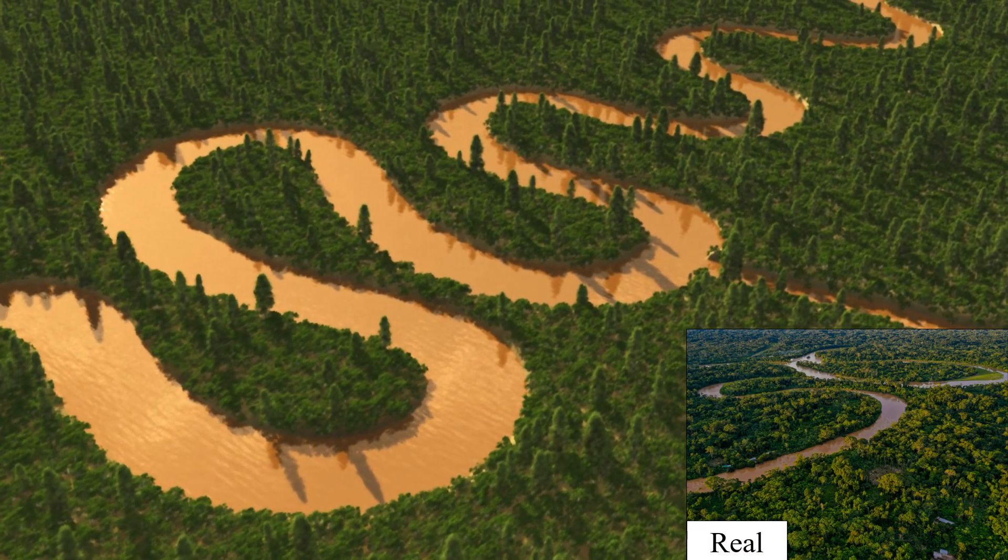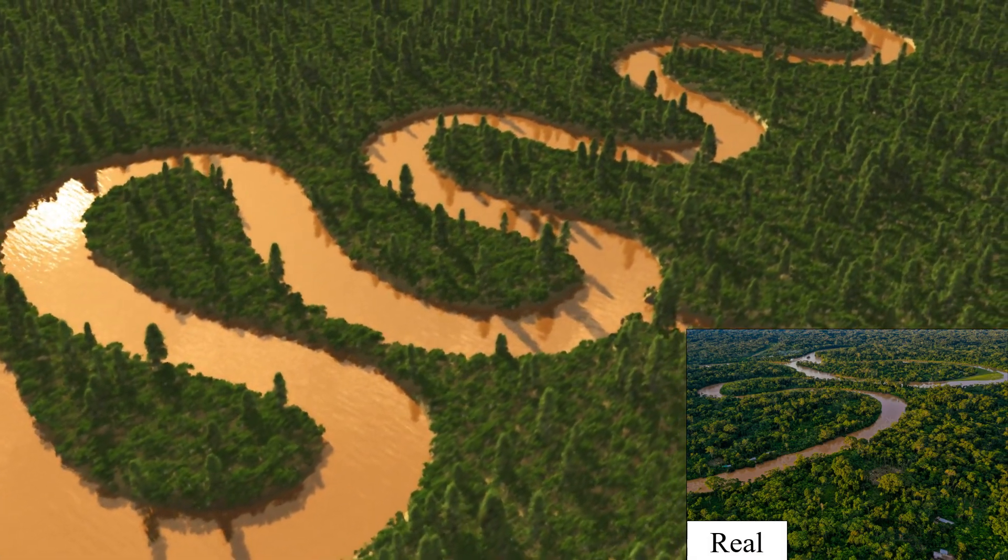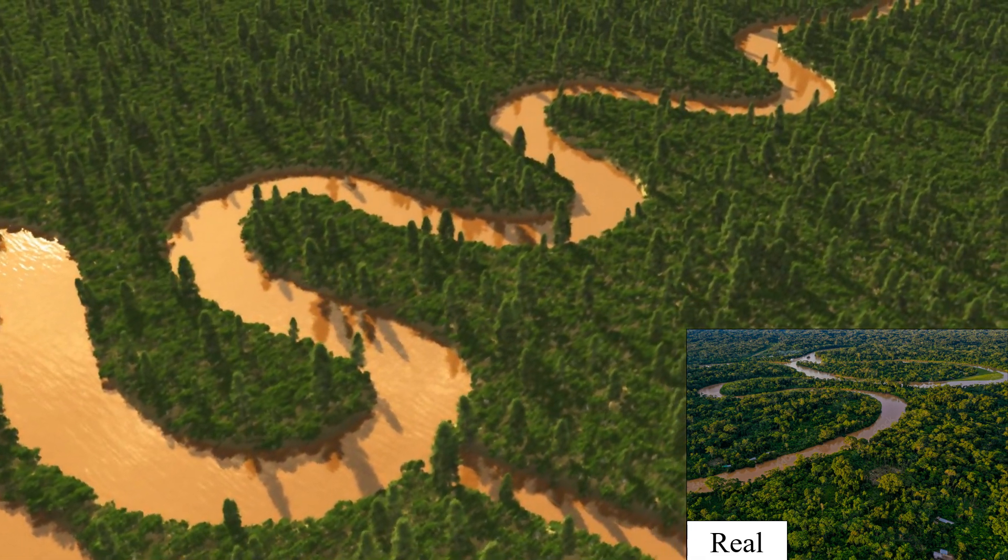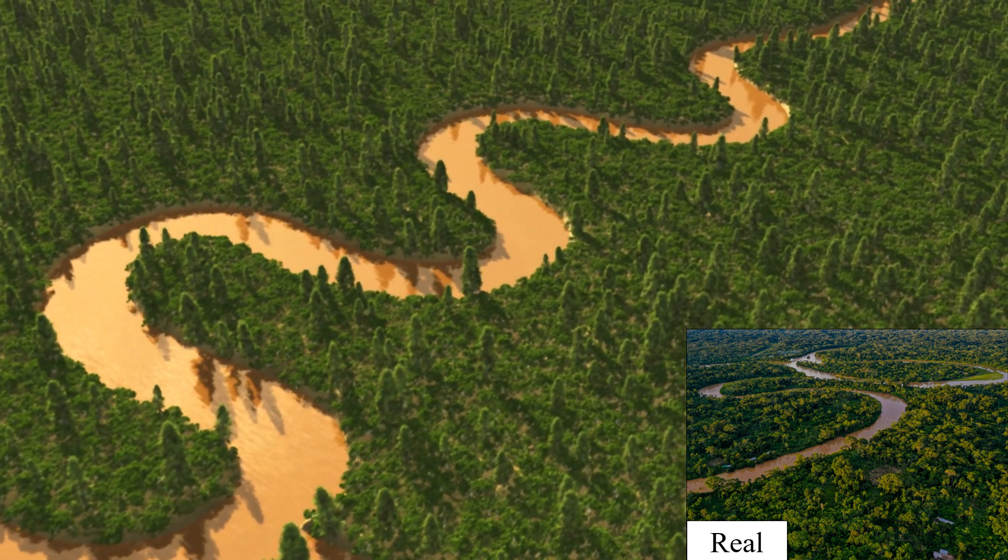We provide a visual comparison of a synthetic river against a real photograph. Here, the user manually created an initially straight channel and ran a 100-step simulation before adding vegetation.